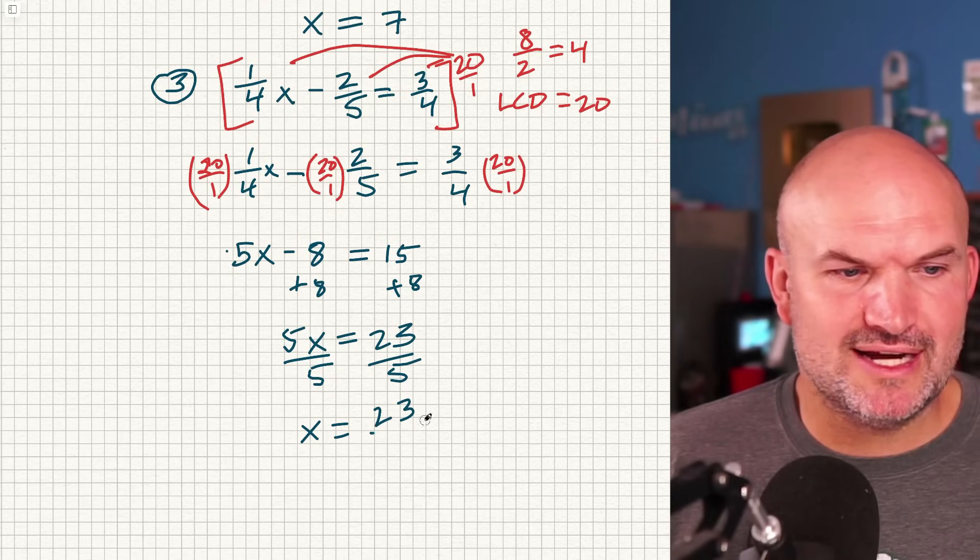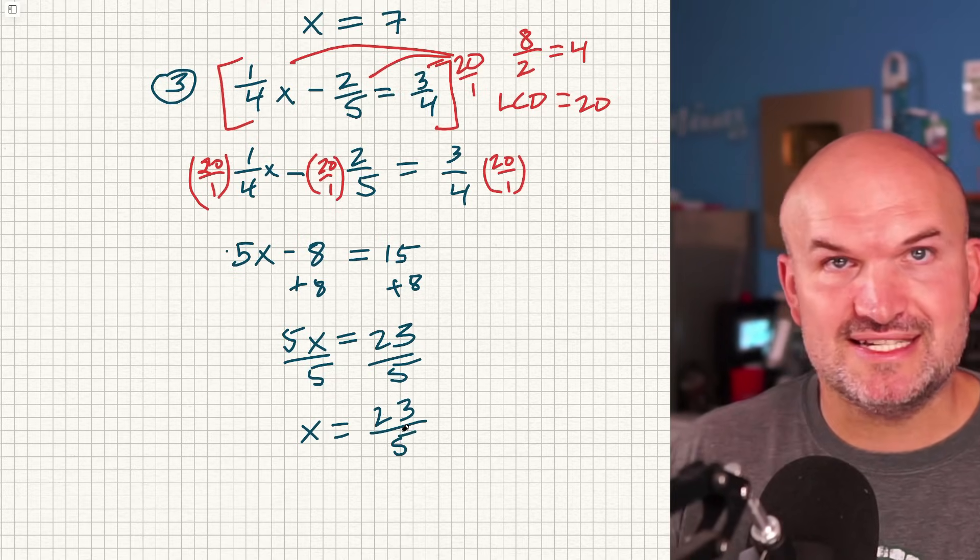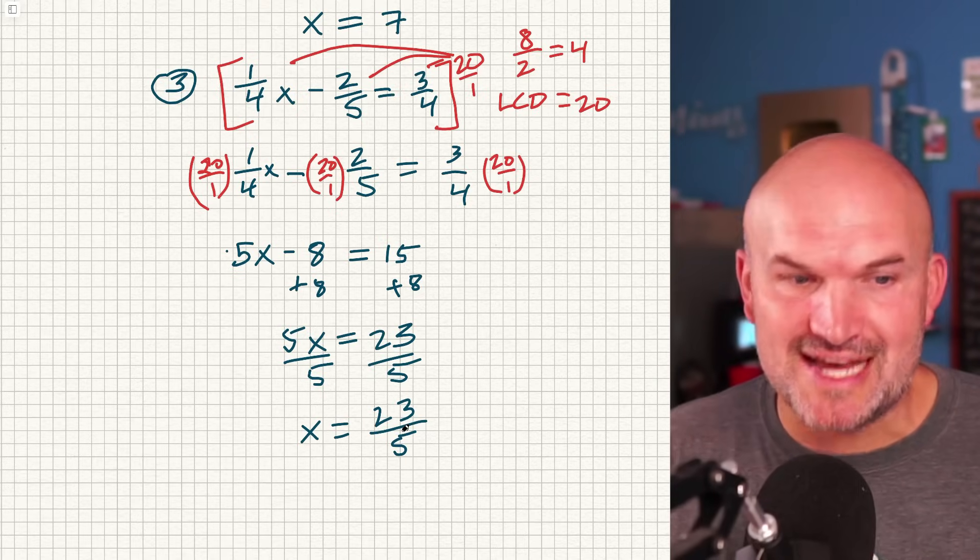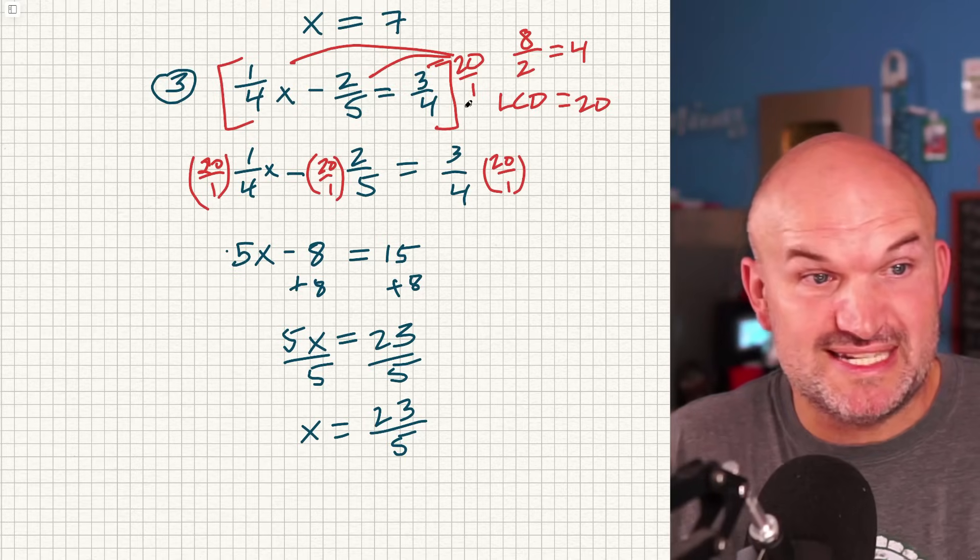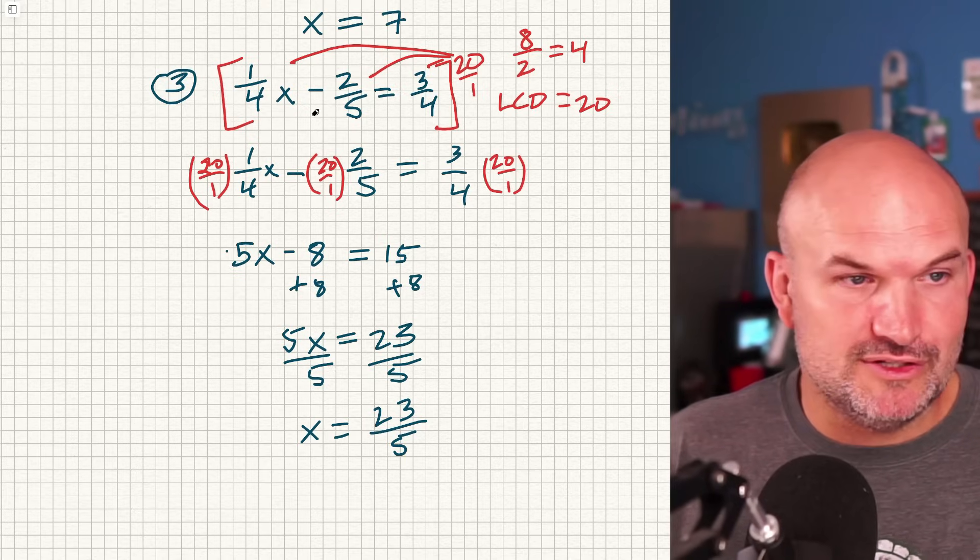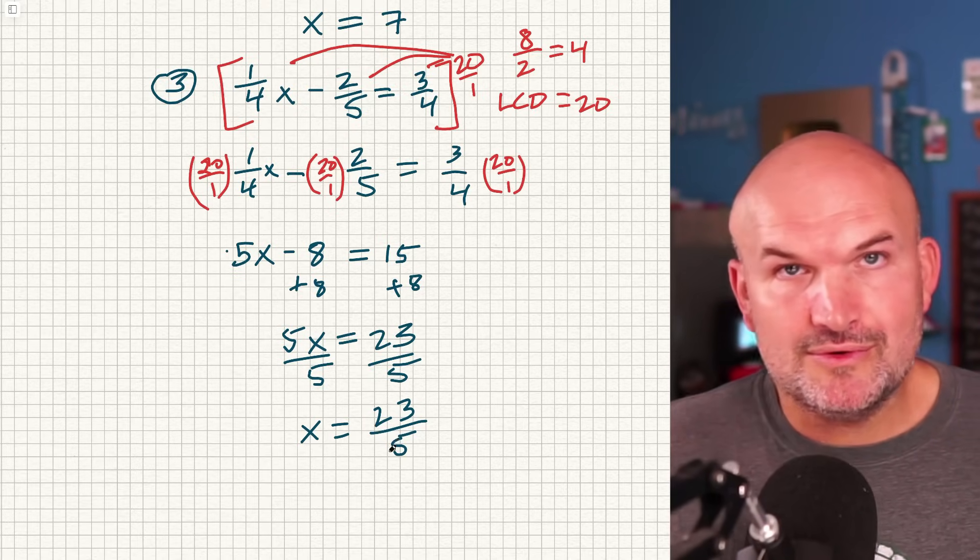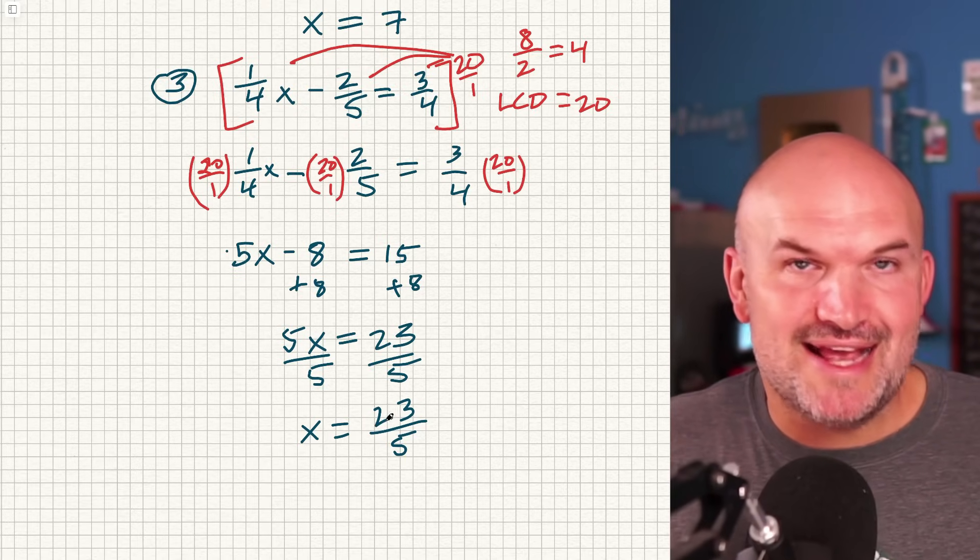I know sometimes we get programmed into always having nice numbers. Nice numbers show up on our tests. They show up on our textbook, but it's also important to understand like, go back and check your work. Make sure you didn't make a mistake. And if you don't see that you made a mistake, 23/5, it's a number. So don't hate on it.